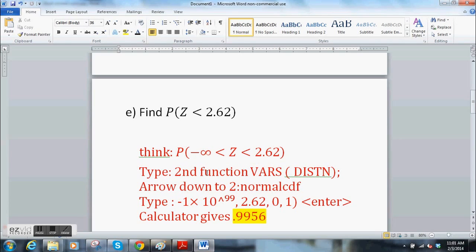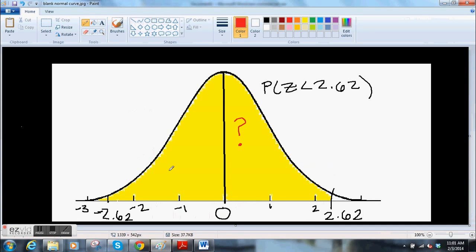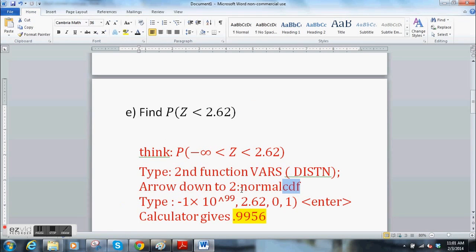Turn on your calculator. Go to second function, VARS. I think that stands for variables. So hit second function variables. You're actually hitting distribution because you want a normal distribution. Arrow down. Use your arrow keys. And it's the second one. It says normal CDF. We're going to use the CDF, the cumulative distribution function because we want all the area.